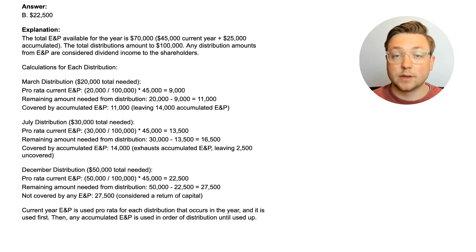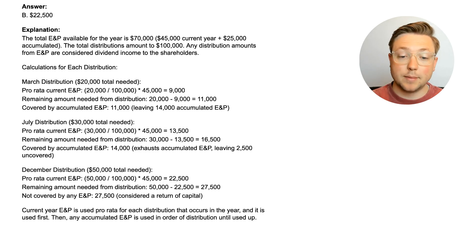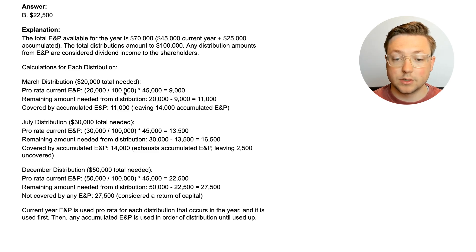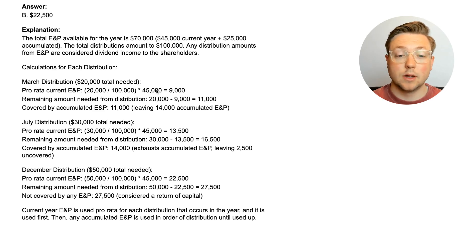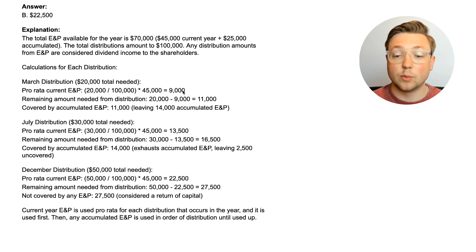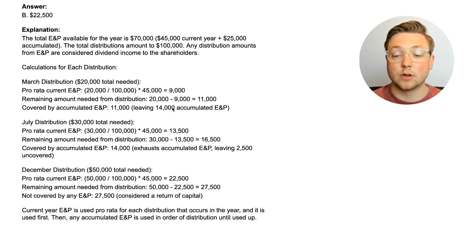For the March distribution, there's $20,000 needed, and we want to cover all of that with E&P if we can. But you have to apply current E&P pro-rata first. You take this distribution out of the total — $20,000 out of $100,000 — and multiply it by the current E&P of $45,000, giving you $9,000. So only $9,000 of current E&P can be used for March. There's still $11,000 uncovered by current E&P, so we use $11,000 of accumulated E&P, leaving $14,000 of accumulated E&P remaining.